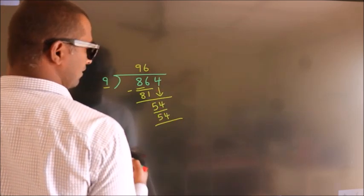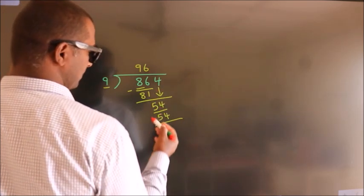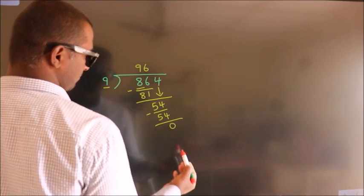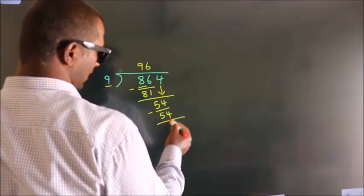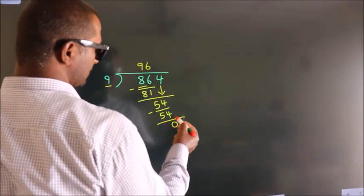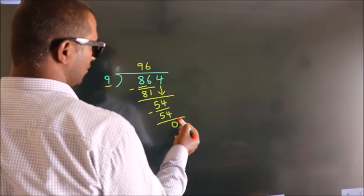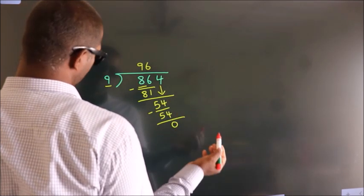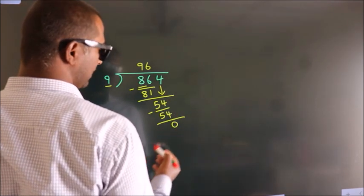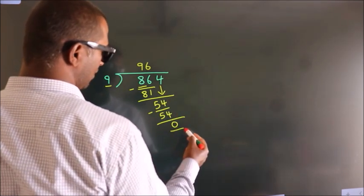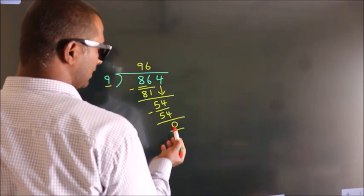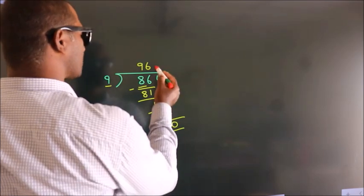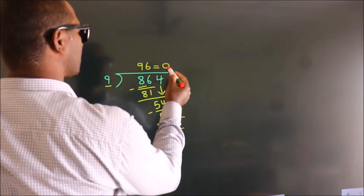Now we subtract and we get 0. After this, there are no more numbers to bring down and we got remainder 0. So this is our quotient.